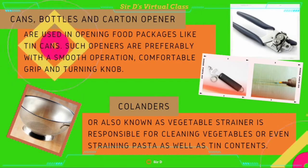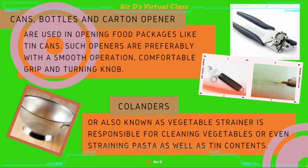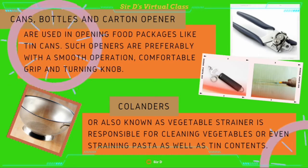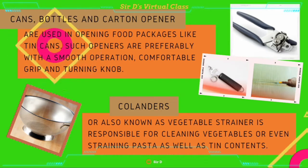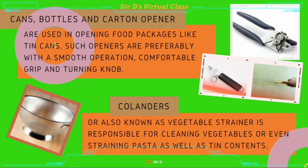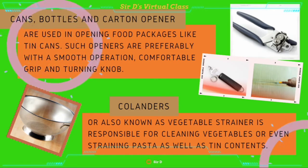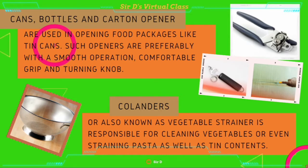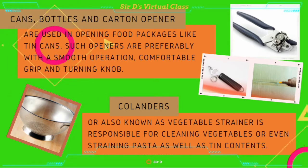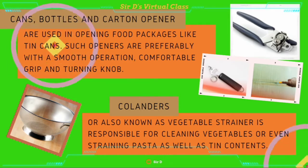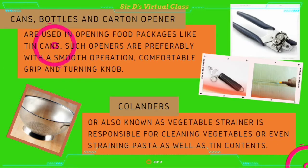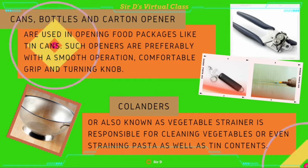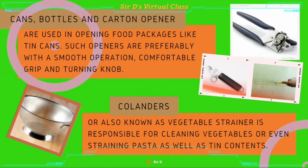Cans, bottles, and carton opener are used in opening food packages like tin cans. Such openers are preferably with a smooth operation, comfortable grip, and turning knob. Colanders, also known as vegetable strainer, is responsible for cleaning vegetables or even straining pasta, as well as tin contents.